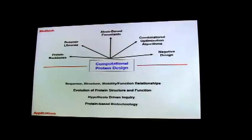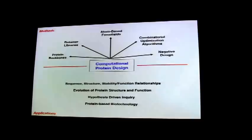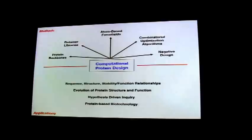Over the years we've focused on a combination of methods and applications for computational design. Most computational protein design methods have these elements in common: you start with a model of a protein backbone derived from the crystal structure database; we use rotamer libraries to capture the conformational flexibility of amino acid side chains; our model includes atom-based force fields that capture the physics of the problem; we use combinatorial optimization methods to solve the combinatorial problem; and for many types of design, negative design becomes important — designing against things you don't want, like aggregation.